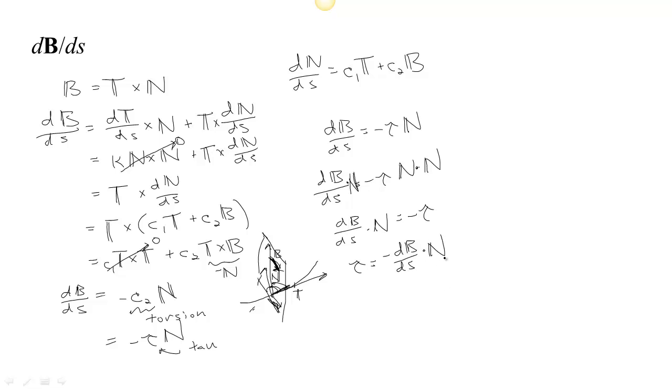And if you remember, there was an easier formula for getting the curvature that involved using the velocity and the acceleration. There's also a formula that is sometimes easier for finding tau.